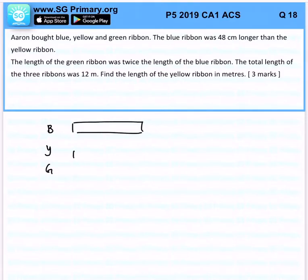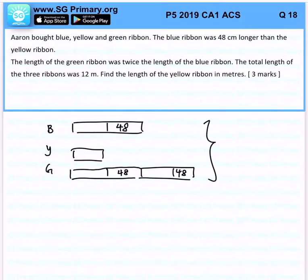The blue ribbon is 48 cm longer than the yellow ribbon. The length of the green ribbon is twice the length of the blue ribbon. So it is 2 times 48. The total length is 12 meters.